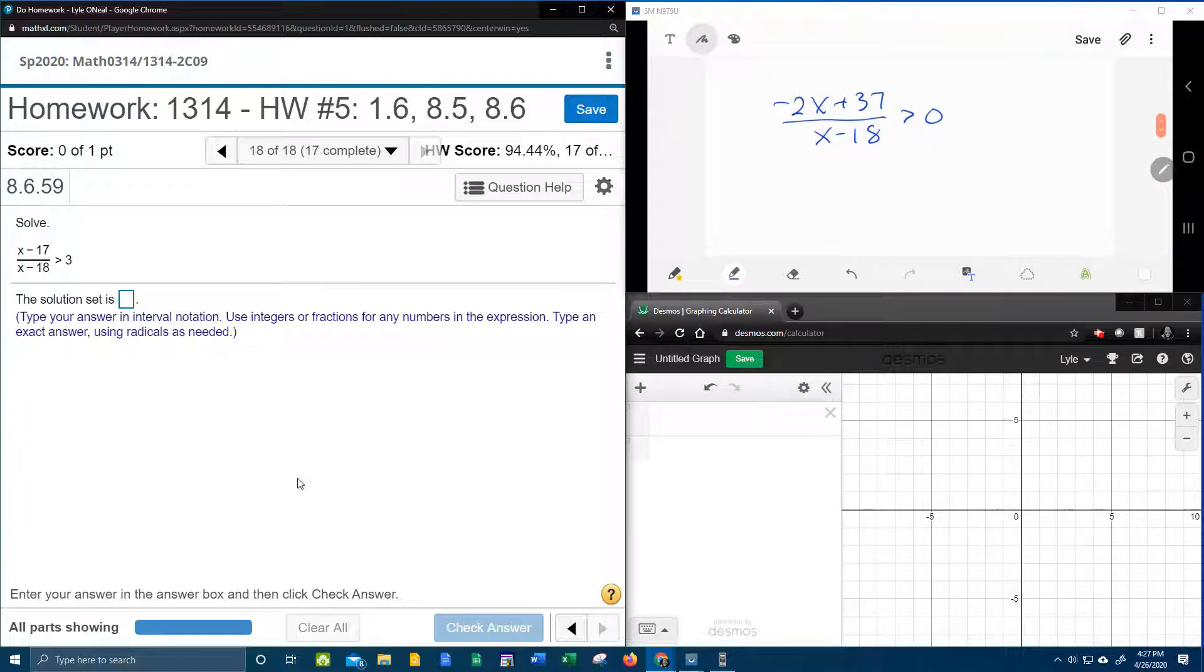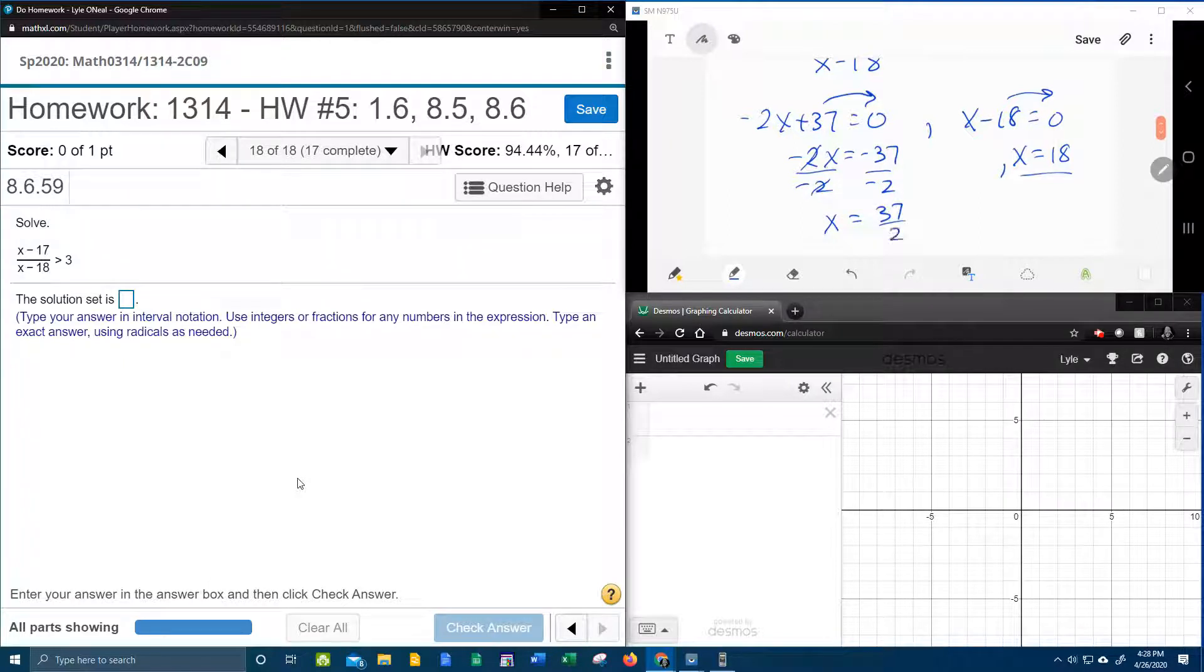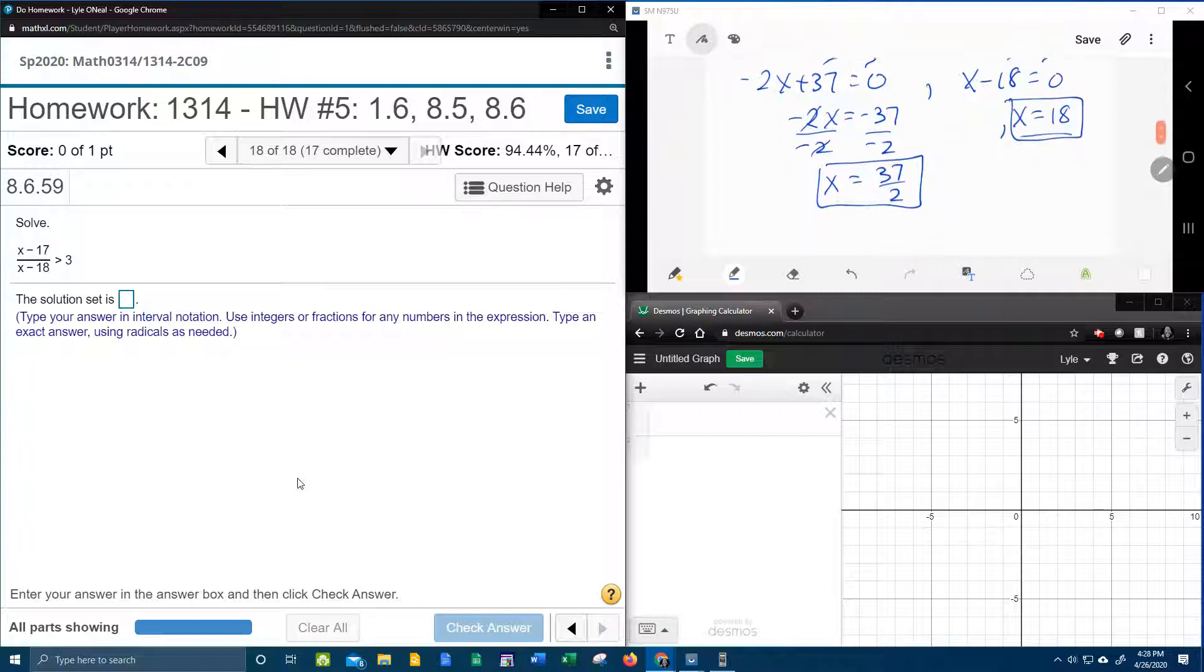Now that the rational inequality is simplified and greater than 0, I can set the numerator and denominator equal to 0 to find my two critical points. -2x + 37 = 0 and x - 18 = 0. The second one is easy: x = 18. For the first one, bringing 37 over gives -2x = -37. Dividing both sides by -2, negative over negative makes positive, so x = 37/2. Now I have my two critical points.